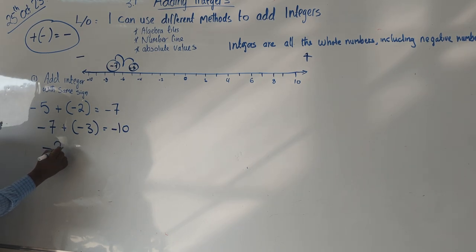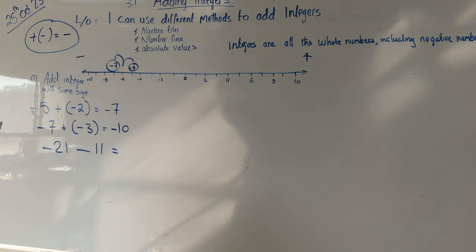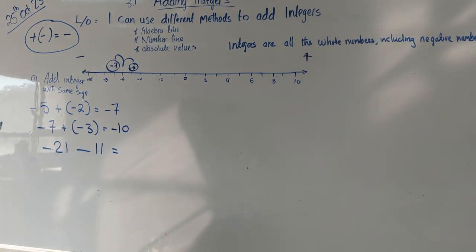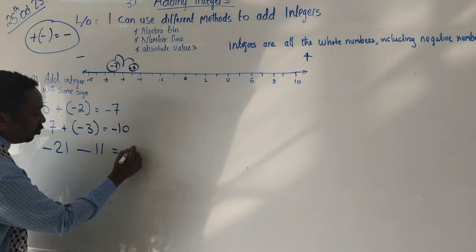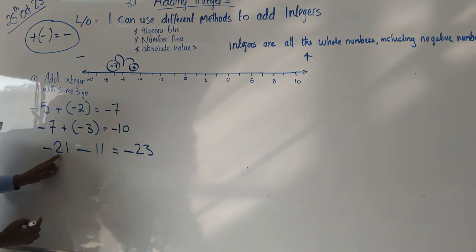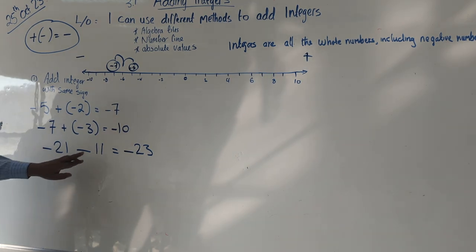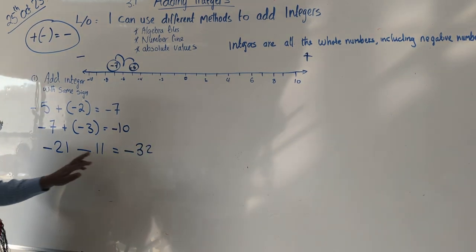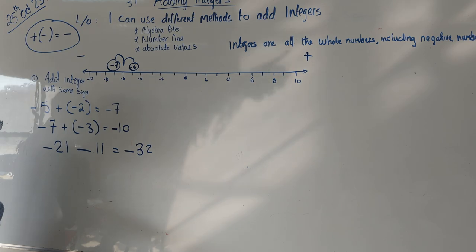Now, who can answer this: if I have negative 21 and negative 11, what will the answer be? Negative 32 — she is right. Because all you have to do is add 21 and 11 to get 32, and because both of them are negative, the answer will be negative. Can you all remember that? If you can't keep this in your head, the number line helps you work it out.